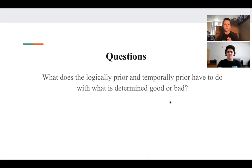Do you want to read it? What does the logically prior and temporally prior have to do with what is determined good or bad? So I'll be tackling this question. So I want to first start by establishing the fact that Nielsen believes in the external standard of goodness. He does not agree with divine command theory and I think that's really important going forward.